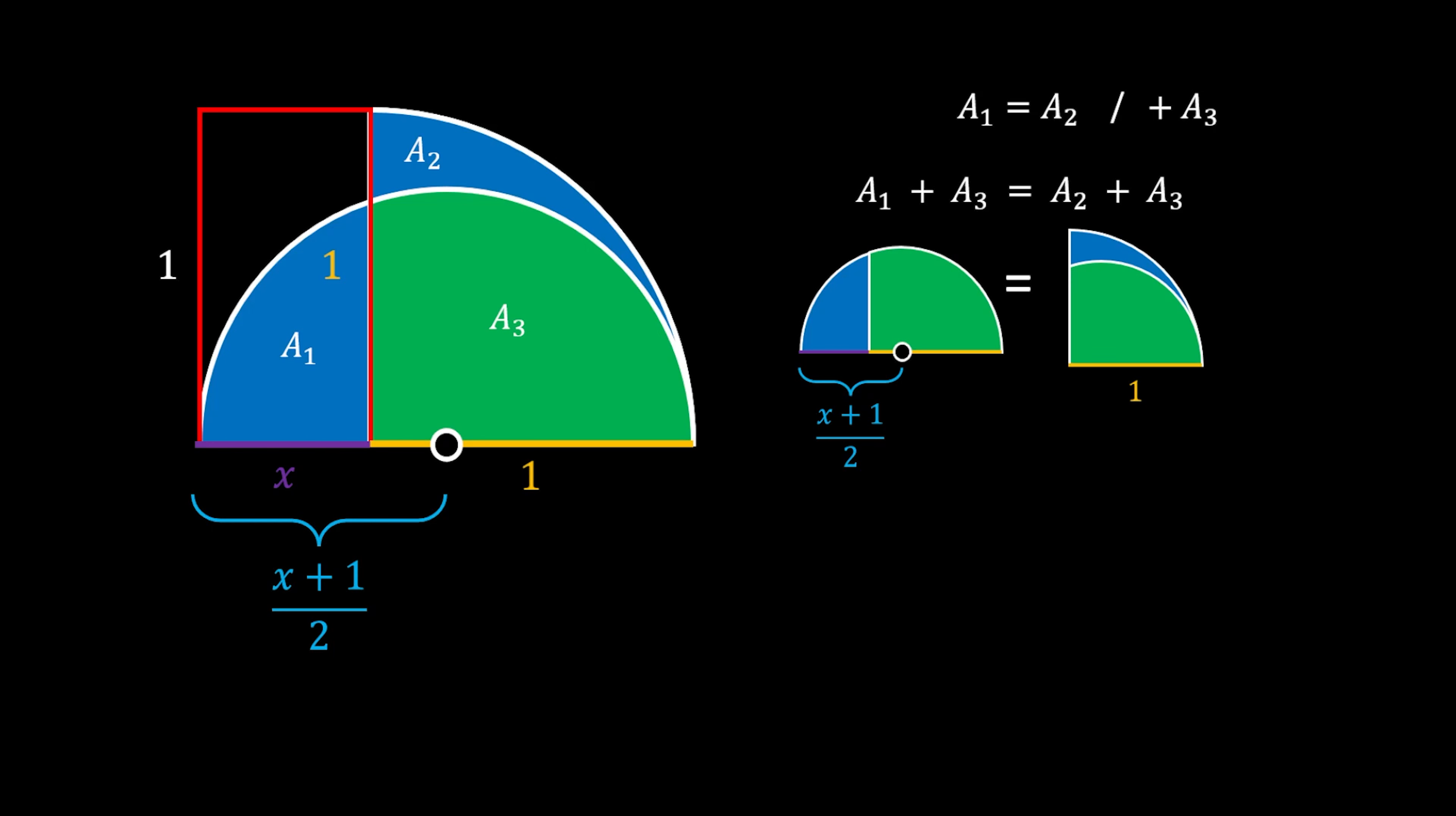We can find the area of A₁ + A₃, which represents the half circle. That area equals (1/2)πr² for this circle. We know the radius is (x + 1)/2, so substituting gives us (1/2)π[(x + 1)/2]².